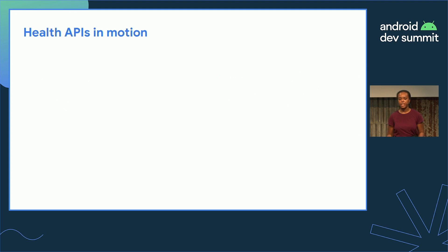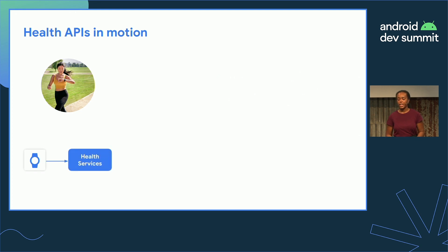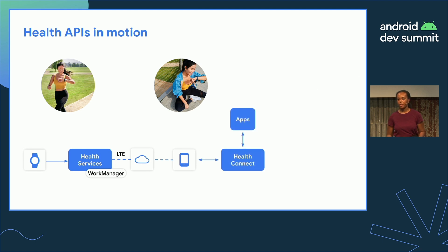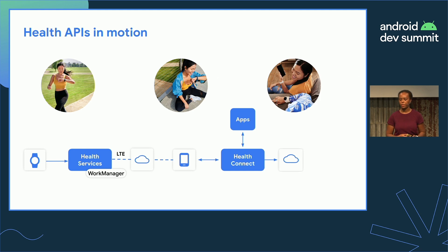With all this in mind, let's revisit the example from earlier. All of the in-workout activity is recorded using the HealthServices exercise client. When the exercise state changes to Ended, WorkManager helps package the data and uploads it to the app's server using the Pixel Watch's LTE connection. Once the data is available in the mobile app, the app's HealthConnect integration writes that workout data to HealthConnect. Then, once we open our social media app, it reads the run now that the app is in the foreground — and the same is true for the nutrition app. Finally, the newly acquired hydration data from the nutrition app is passed from the app's backend to the watch using a Wi-Fi connection.